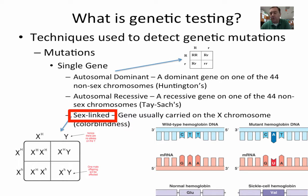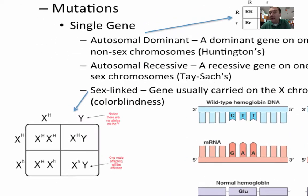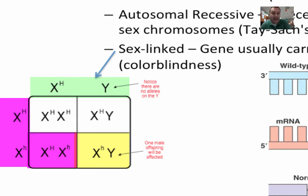Sex-linked traits are usually only carried on the X chromosome, so X-linked and sex-linked mean the same thing. Here we have an example of hemophilia — a hemophiliac male mating with a carrier female. The only offspring with the disease is in the lower right corner: the male with the X superscript small h. Half of the females would be carriers, meaning they would be heterozygous.